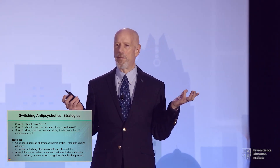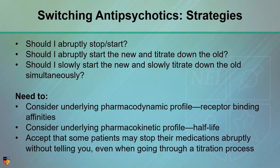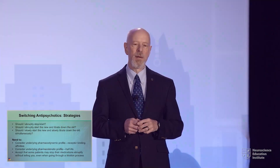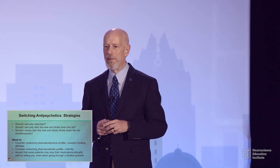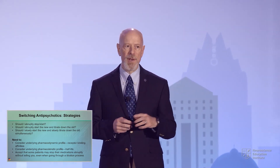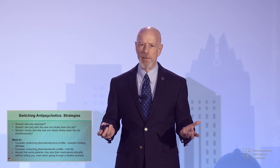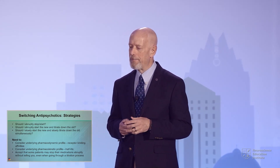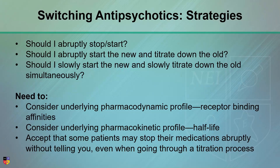There are several strategies on our minds for how to switch: should I abruptly stop or start, should I abruptly start the new and titrate the old, start the new slowly, titrate down slowly — there are so many variations. But we have to consider what would be the optimal approach to prevent tolerability issues and to preserve efficacy as best we can. To do that, we have to understand the pharmacodynamic profile — which receptors do these drugs hit — and the pharmacokinetic profile, meaning half-life.